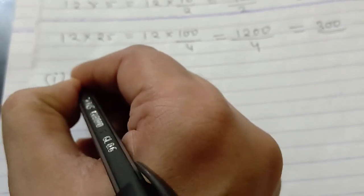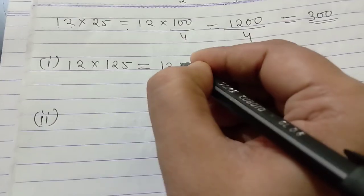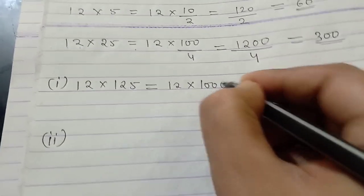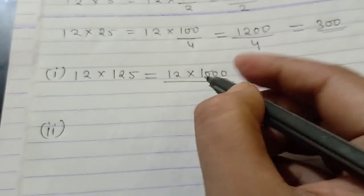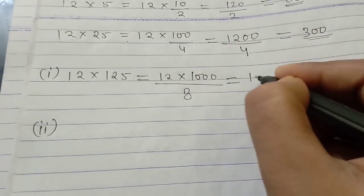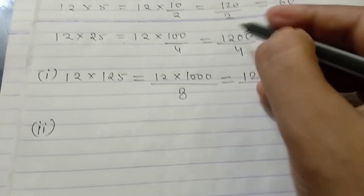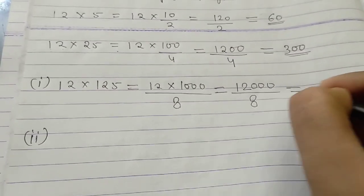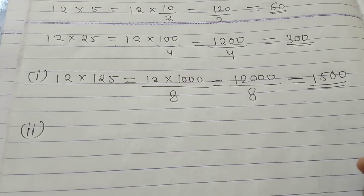In the same manner, 12 multiplied by 125 equal to, again we have 12 into, see here, this is 10, 100. So, we will follow the pattern 10 times. It will increase, it will become 1000 and now 2 to 4, 4 to 8. Now, it is 8. 12 multiplied by 1000 gives 12000. Now, if we divide the number by 8, we will get 1500 as the answer.